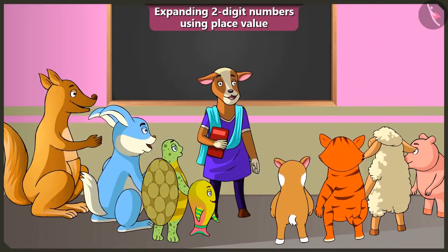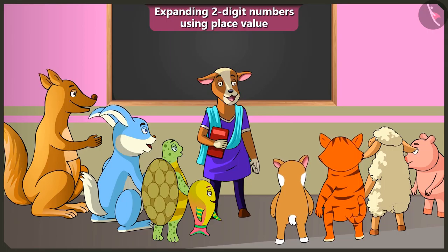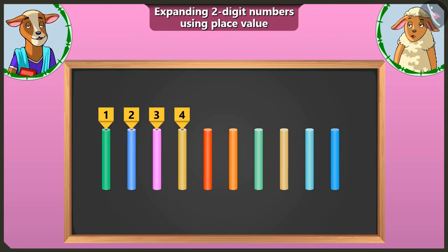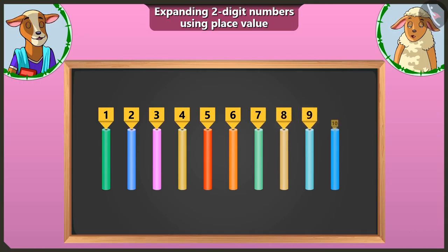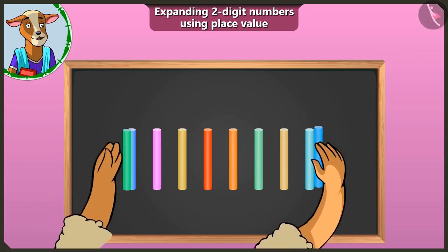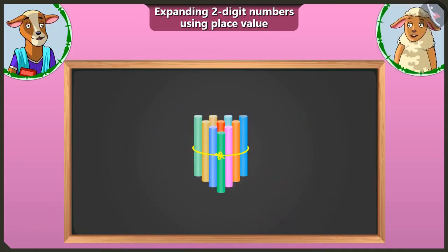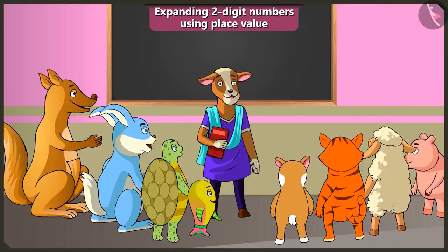Children, in the last video, you have learned to make bundles of tens. So now Lily, make a bundle of ten and show us. I will tie these one, two, three, four, five, six, seven, eight, nine and ten chalks like this here. It has become a bundle of ten. Well done, Lily.